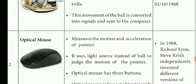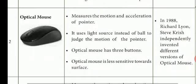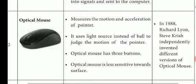The optical mouse measures the motion and acceleration of the pointer. It uses a light source instead of a ball to judge the motion of the pointer. The optical mouse has three buttons and is less sensitive to surface texture.